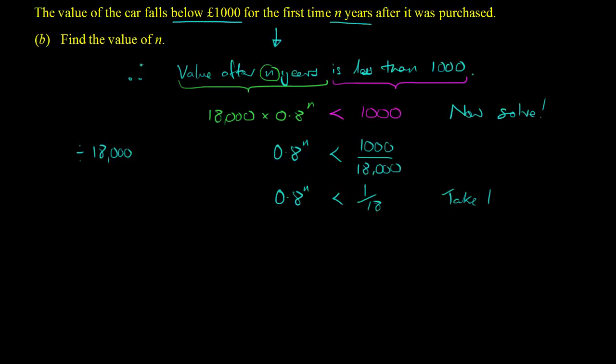Now, if this were an equation, you'd take logs, so that's what we'll do. You can still take logs of both sides of an inequality. So, log of 0.8 to the power n is less than log of 1 18th. And again, we can use the power rule to bring the n out to the front. So we end up with n log 0.8 is less than log of 1 18th.